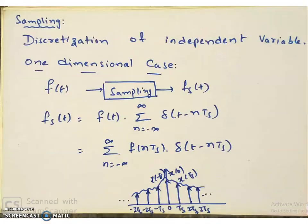Moving on to image sampling. Sampling is nothing but discretization of the independent variable of the signal. Let us say F of t is the signal we are looking at. When we sample the signal we will get Fs of t. Sampling the signal is multiplying the signal with the impulse train. So Fs of t equals F of t multiplied with summation over n from minus infinity to infinity of delta of t minus n·ts.